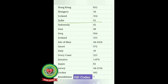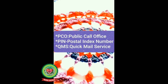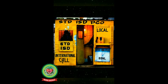Take a look at the ISD codes — all the countries have their unique codes. These are a few examples of ISD codes. Next is PCO — Public Call Office. It is referred to a place in the public area which provides a telephone facility. See a picture of PCO.